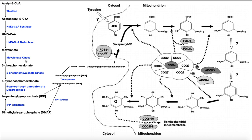Mevalonate kinase uses ATP to phosphorylate mevalonate and make 5-phosphomevalonate. 5-phosphomevalonate kinase then phosphorylates that to make 5-pyrophosphomevalonate. Then 5-pyrophosphomevalonate decarboxylase removes the carboxyl group and forms the 5-carbon molecule isopentanyl pyrophosphate, or IPP. Some IPPs are then isomerized into DMAPs by IPP isomerase, creating an equilibrium between the two basic building blocks.